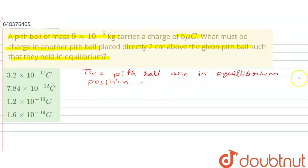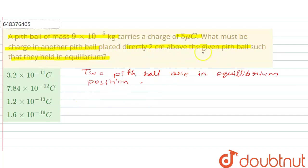This equilibrium position is only possible when the weight of the first pith ball is equal to the electrostatic force between these two pith balls due to the charges present on them. So first, we find the weight of the ball.